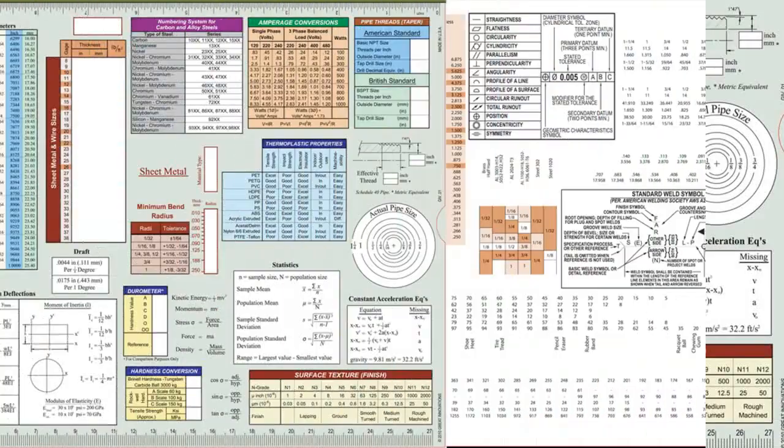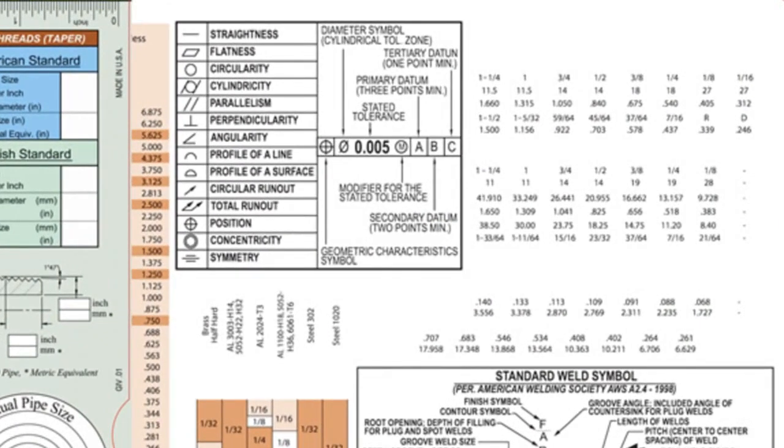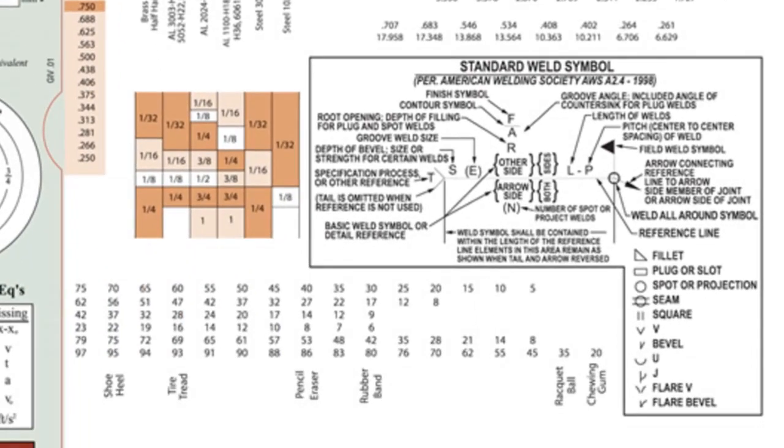Pull the sliding card out to the right and you'll find two more tables for call outs for geometric dimensioning and tolerancing, and below that, call outs for standard weld symbols.